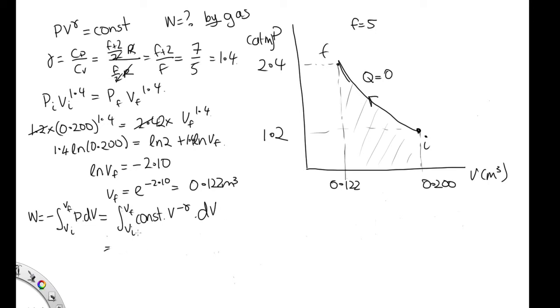Now we want to integrate this. The constant's just a constant, so it can go out the front. When we integrate this, we end up with V to the minus gamma plus 1 over minus gamma plus 1. We dropped our negative sign there, so we need to put that back. And that's at VF and VI.